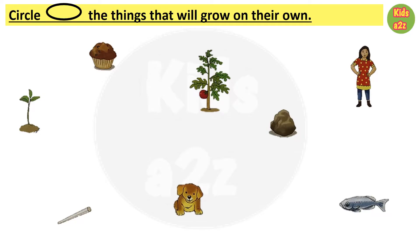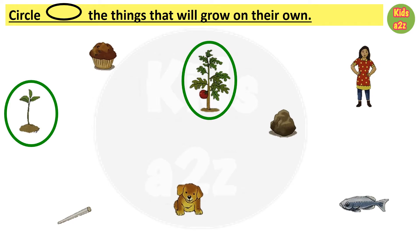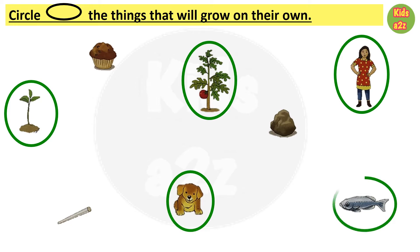Here, kids need to circle the things that will grow on their own. They need to circle both the plants, the girl, dog, and fish, because these are living things and they can grow on their own.